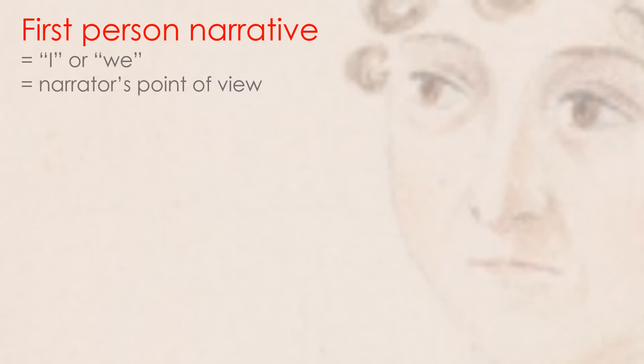To begin with first person narrative: this is usually in the 'I' or the 'we,' so the story is told from the narrator's point of view. A classic example would be Charlotte Brontë's Jane Eyre — the opening to the final chapter, famously: 'Reader, I married him.' So the first person is a sort of autobiographical mode, told from the main character's — from the heroine's or hero's — perspective.